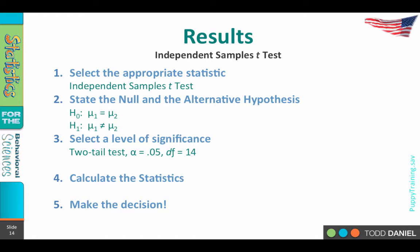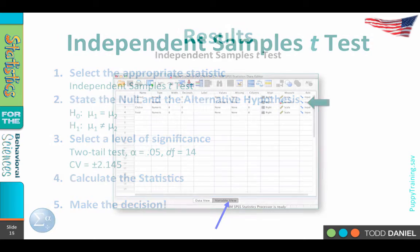If we go to our T table at the back of our notes and we look up degrees of freedom equal 14, two-tailed test, alpha equals 0.05, the critical value from our T table is positive negative 2.145. Now we are ready to run the numbers. So we'll turn to SPSS to calculate the statistics.